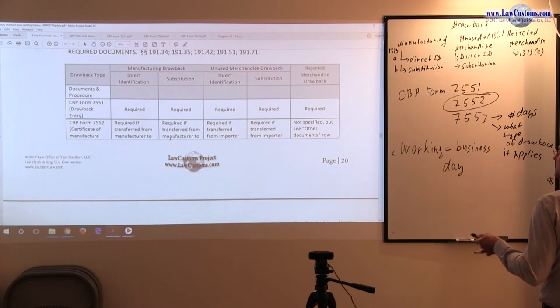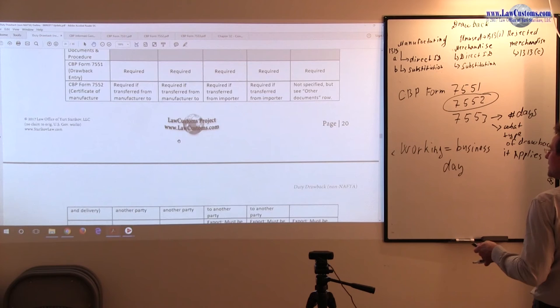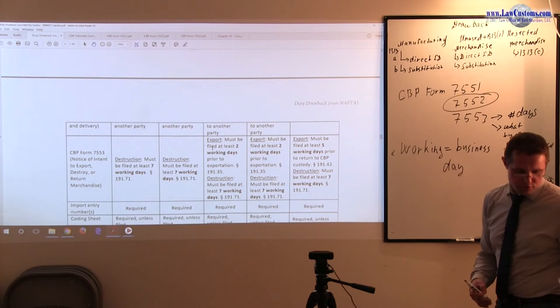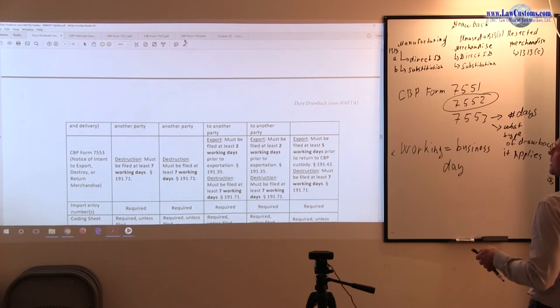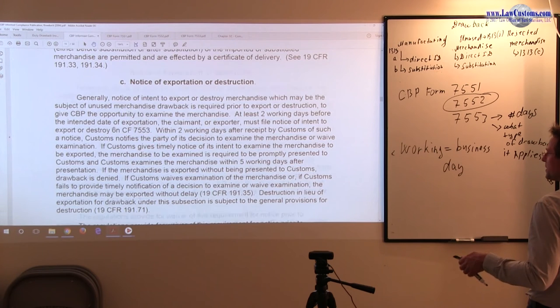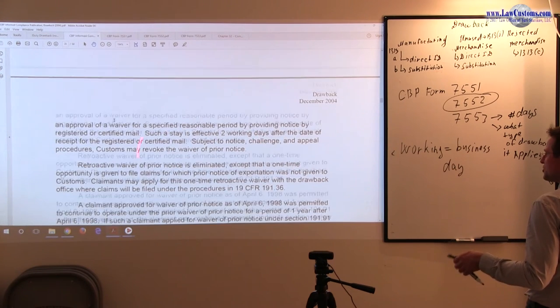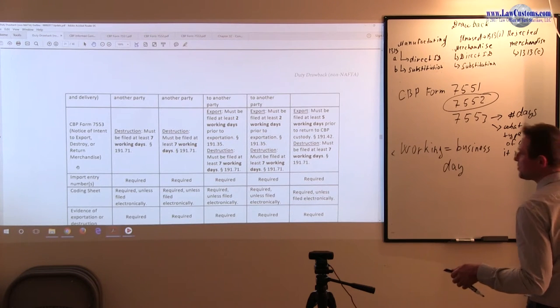In this case, both direct identification and substitution variation for unused merchandise, they have two working day requirement for filing, at least two working days. And the export has five working days requirement. Also I'd like to bring your attention to the waiver discussion in the informed compliance publication. Notice of exportation and destruction, customs goes into this two working day rule, five working day rule, and also the waivers. That chart represents the snippet of whatever is here.